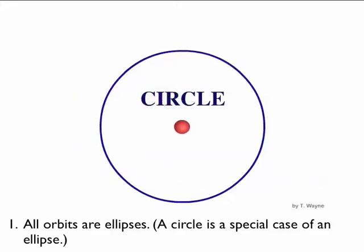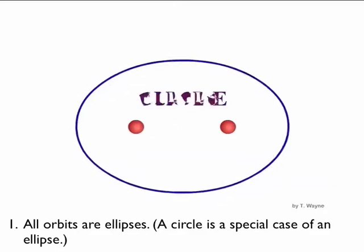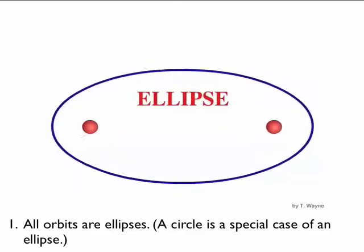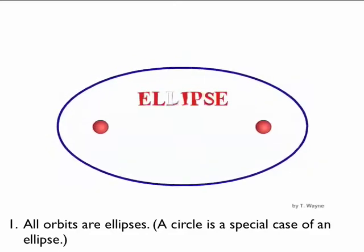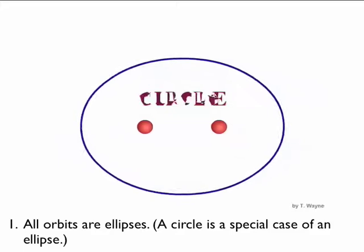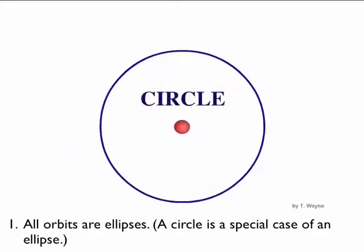The star that you're orbiting or the planet that you're orbiting, whatever that body is, it's going to be at one of these foci. It might be two bodies at each foci, or one body at only one foci, but it's got to be at one of the foci. If it's a circle, obviously it's right in the middle.